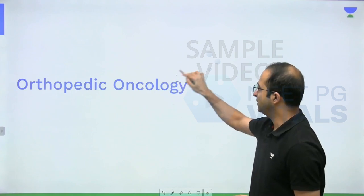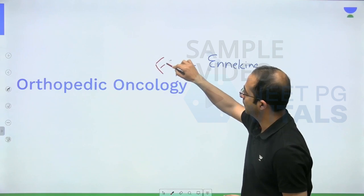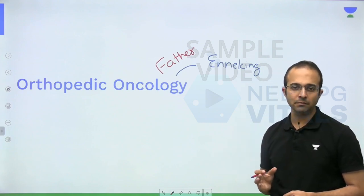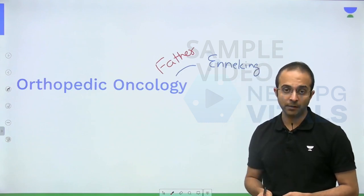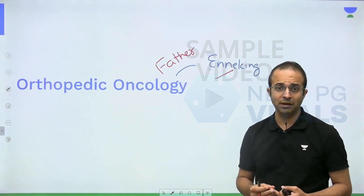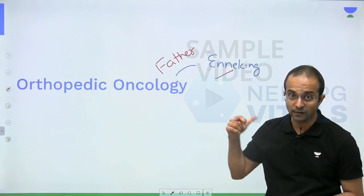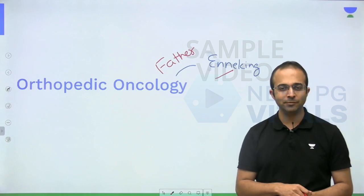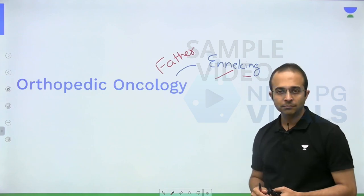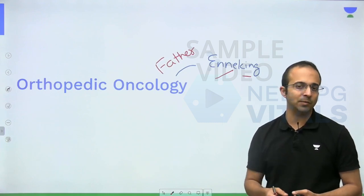Before we start, let me share an interesting thing. This gentleman, Anné King, is called the father of orthopedic oncology. I'm telling you this because years back when I gave my All India exam, there was a question asking who is called the father of orthopedic oncology, and this person cost me a few ranks because I didn't know his name. So remember: the father of orthopedic oncology is Anné King, who gave a classification system for bone tumors.